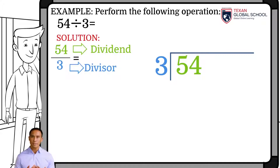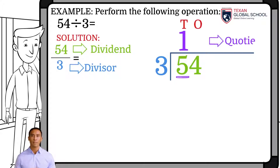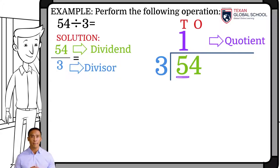Since the first digit of the dividend is greater than the divisor, we can see that the divisor only fits into the dividend once. This result is placed in the quotient in the corresponding column — in this case, in the tens. Now, multiply this 1 of the quotient by the divisor 3, and place the result below the dividend. Hence, subtract 5 from 3.